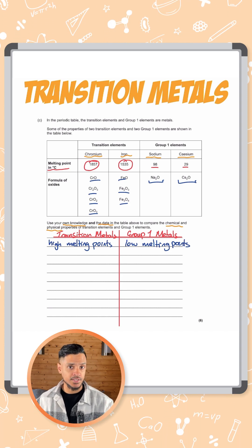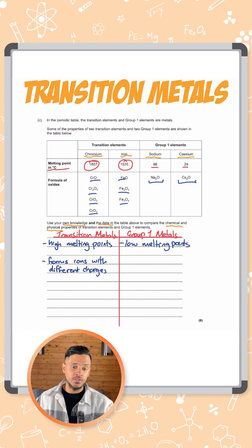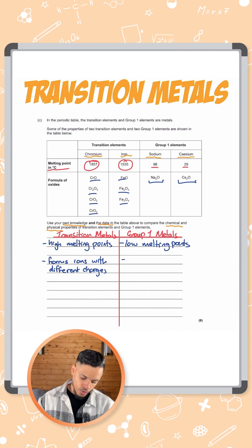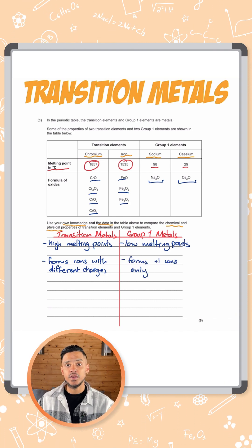So that's one of the chemical properties that we have. So we can say for transition metals it forms ions with different charges and for group one metals it only forms plus one ions.